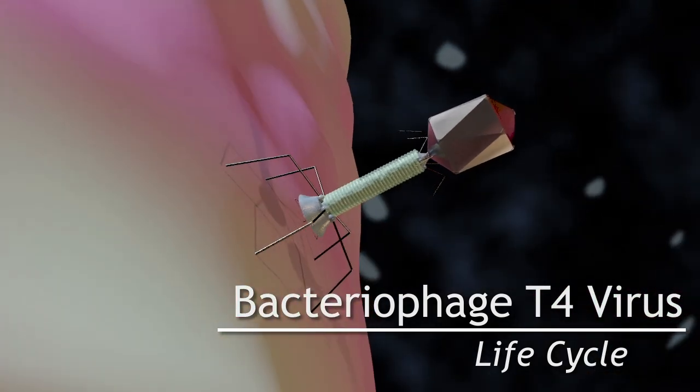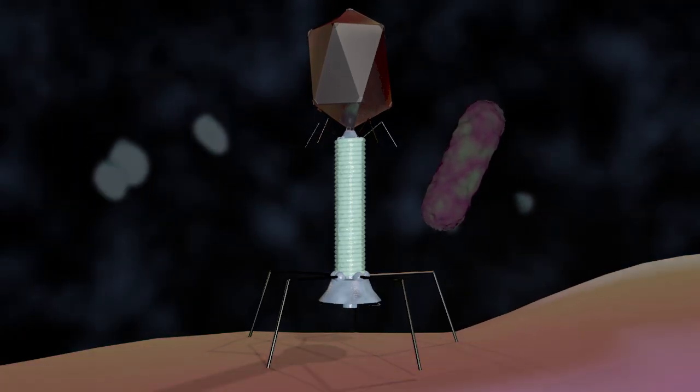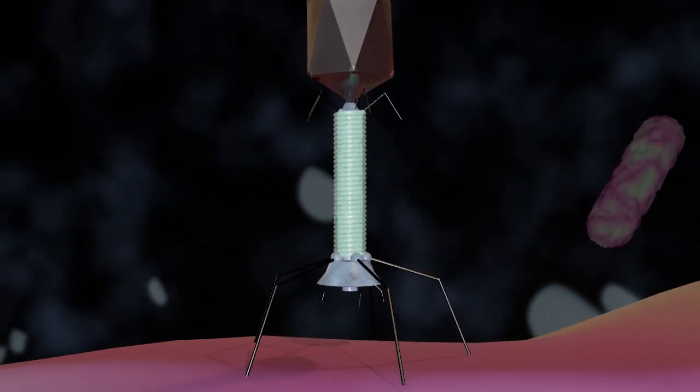A recognition signal is sent through the long tail fibers to the base plate. This unravels the short tail fibers that bind irreversibly to the E. coli cell surface.